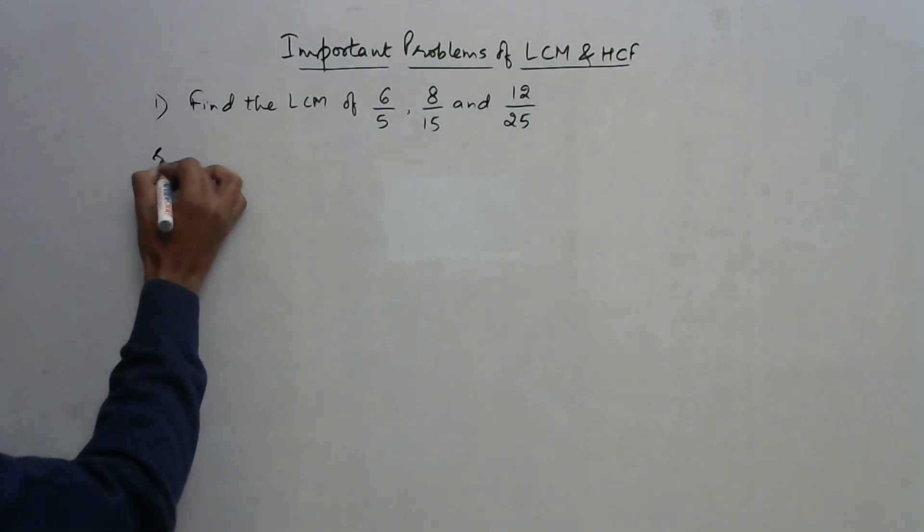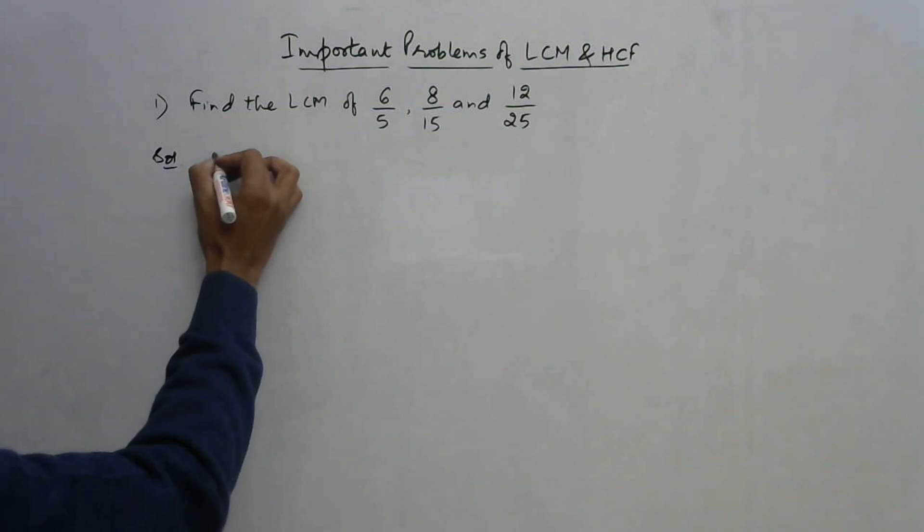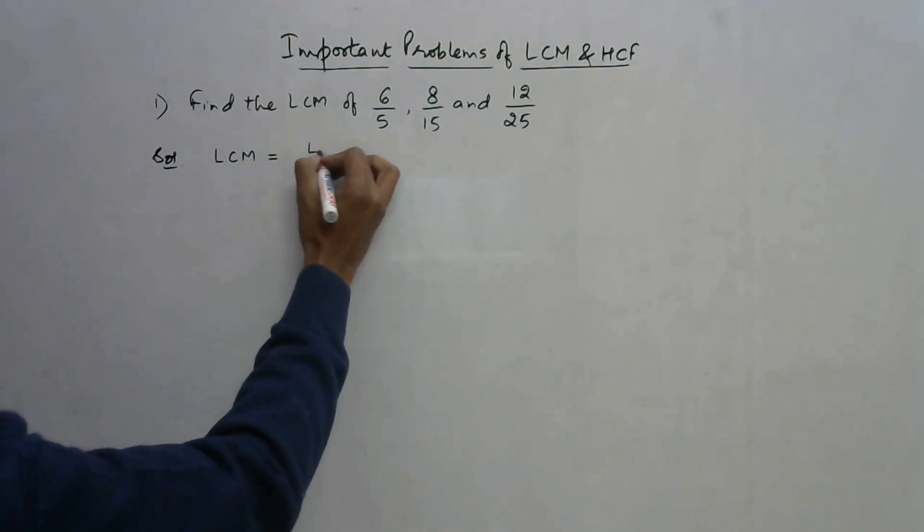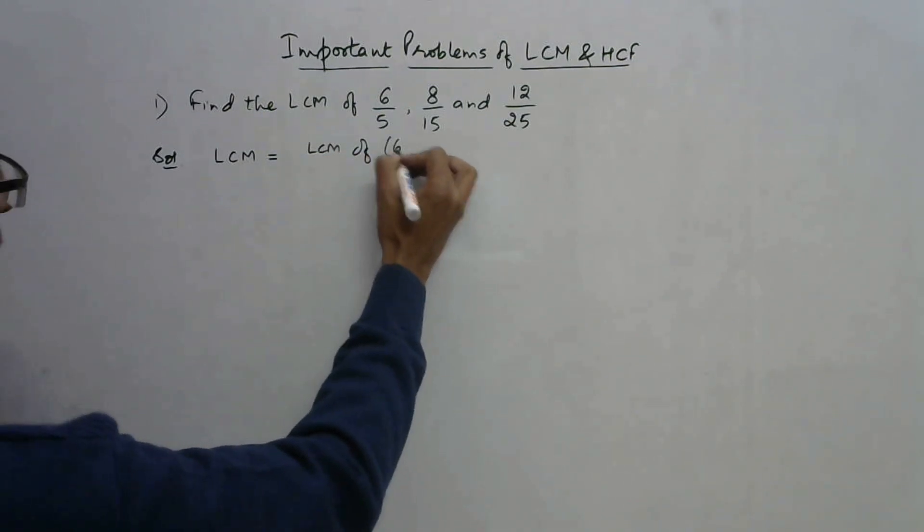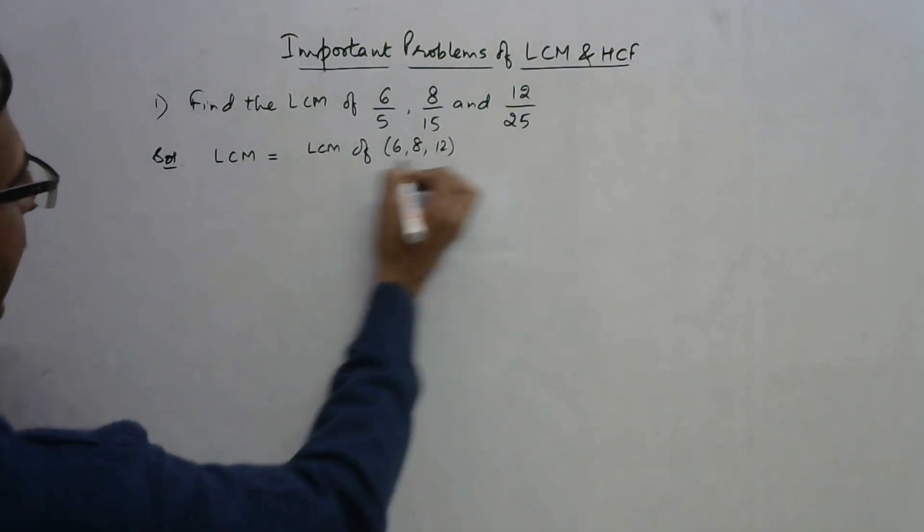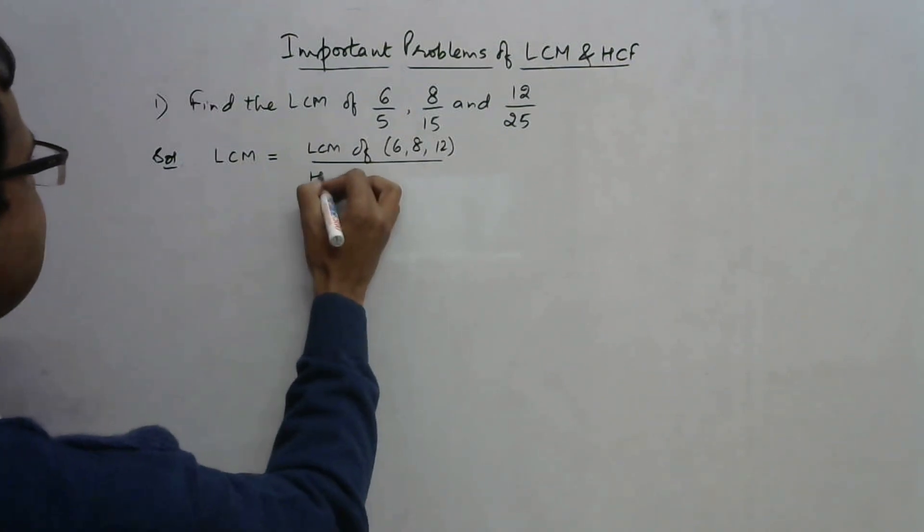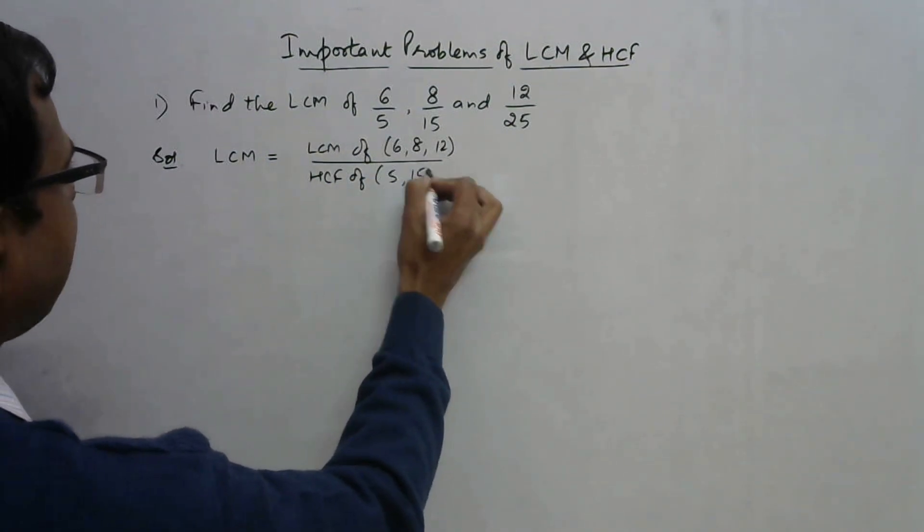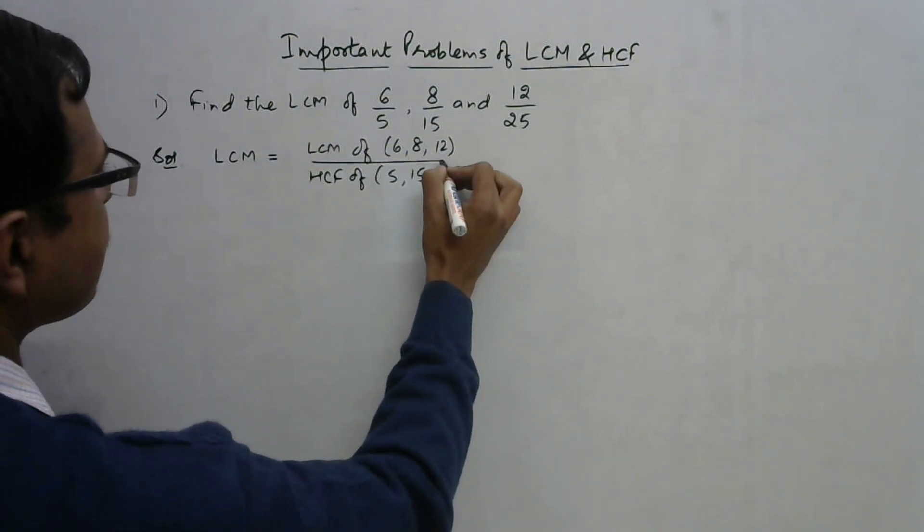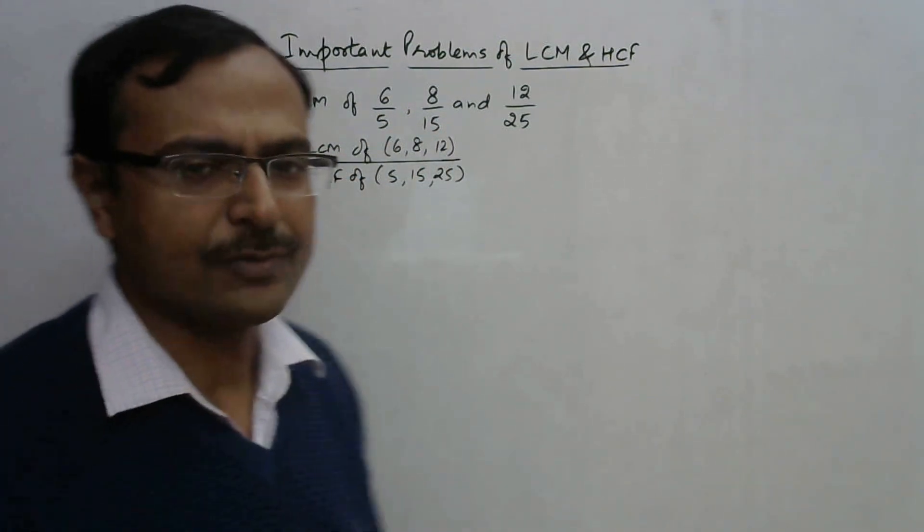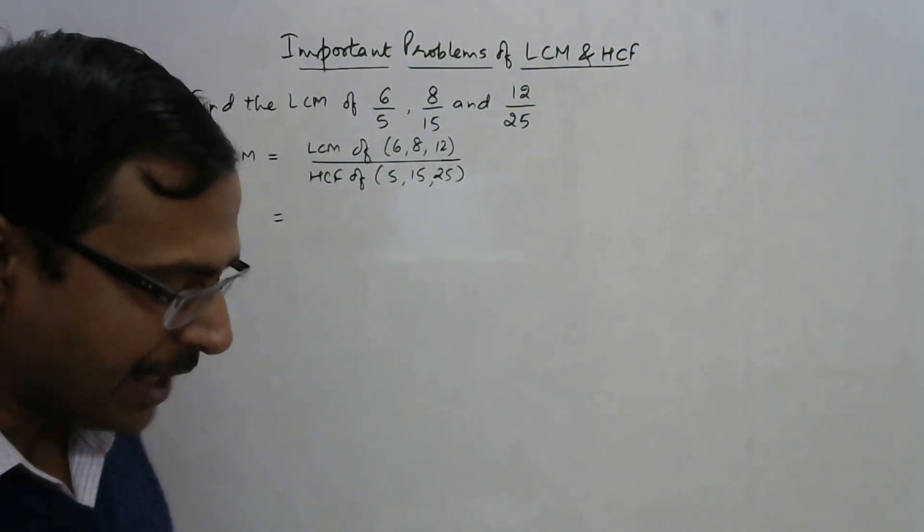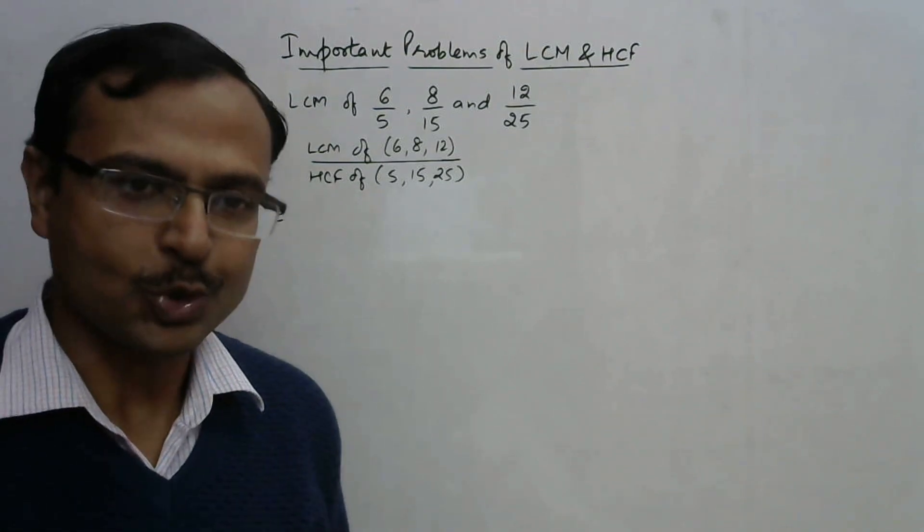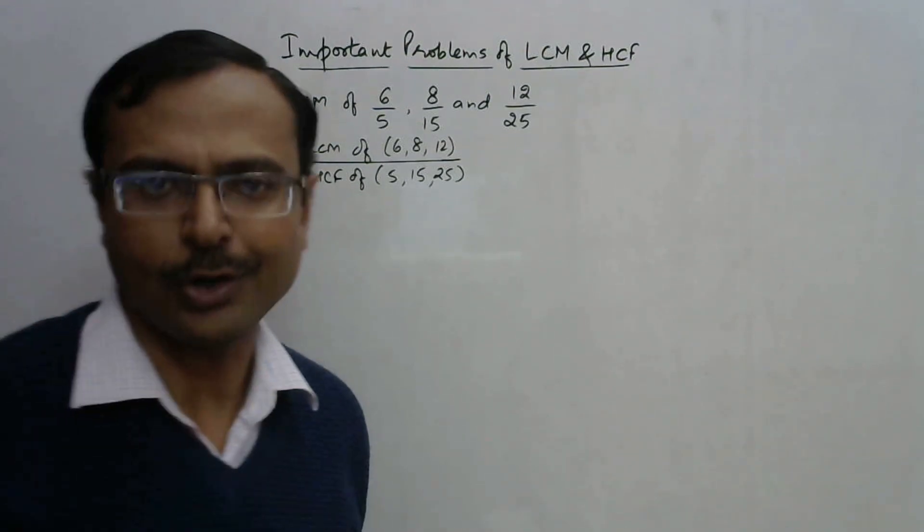Now whenever we talk of LCM of fractions, the LCM of fractions is actually the LCM of the numerators 6, 8, 12 divided by the HCF of the denominators 5, 15, and 25. I'm going to solve it through short tricks only for you.